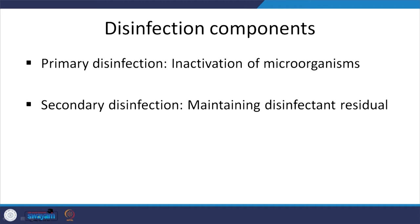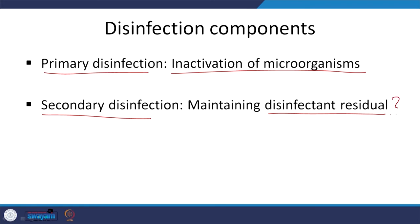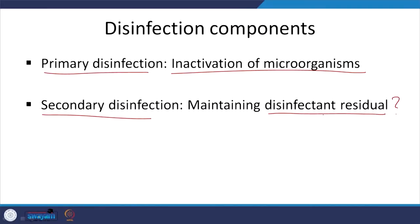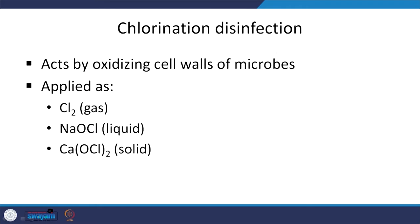Two aspects to consider: first, the obvious one — inactivate the relevant pathogens. Second, maintain disinfectant residual so that there is oxidizing or disinfection capacity remaining in your distribution network. If there is any microbial growth or pathogen entry into the distribution network, this residual disinfectant can take care of that.